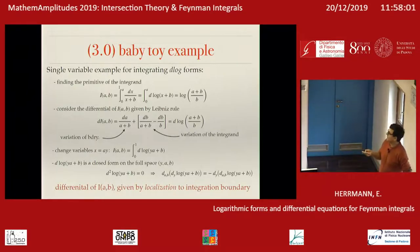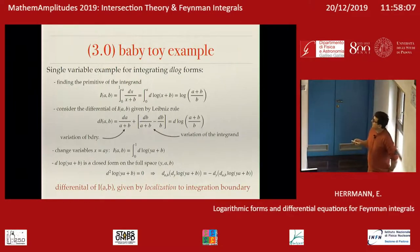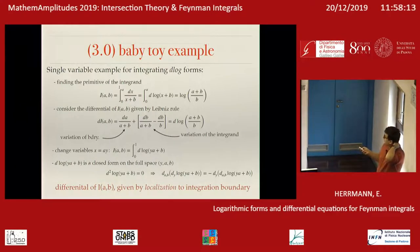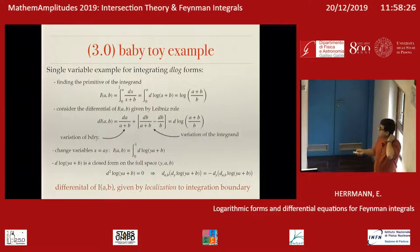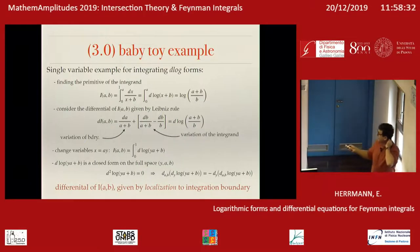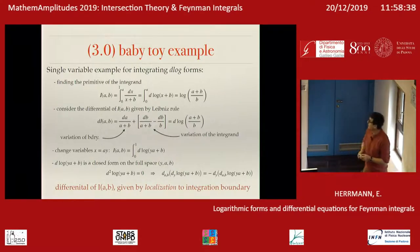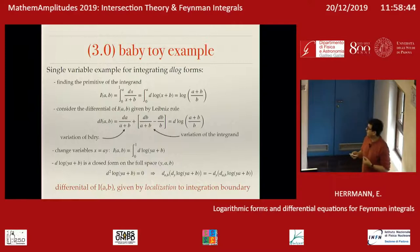Putting everything together, I find the D-log form which I can now integrate in terms of the external variables. The critical thing is this: if you consider this integrand — not only as a form on the integration variable Y, but also together with the external parameters A and B — if you think of this as a differential form on the full space, then of course this will be a closed form. That allows integration by parts, and from this integration by parts, the crucial thing is that the integral localizes to the boundary.